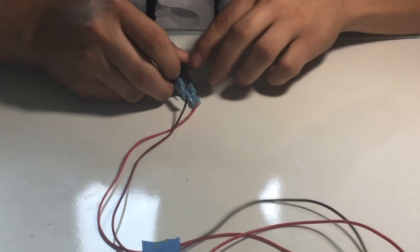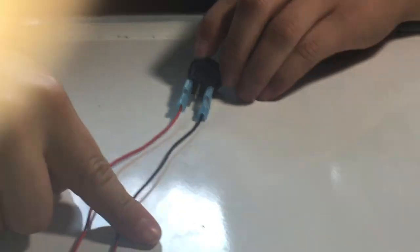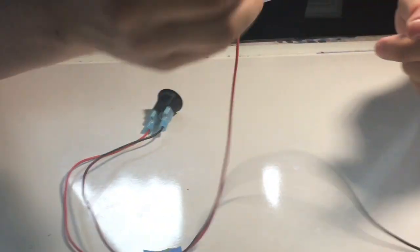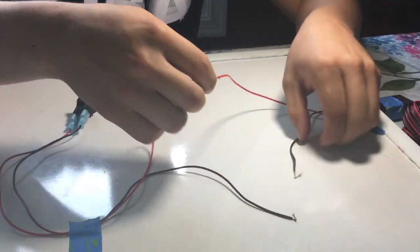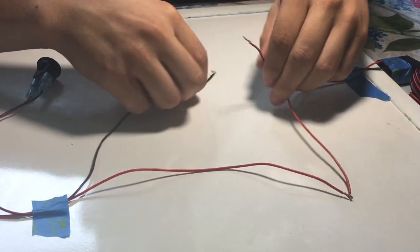So like I said, the positive straight to your power source, the negative straight to the ground. You can run them to your battery, which is what I'm going to do right now. Positive goes with positive, and then the negative goes with the negative.